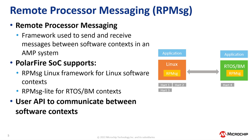The RPMessage Framework provides a user application programming interface to communicate between software contexts. For more information on inter-core communication or the RPMessage Framework on PolarFire SOC, please refer to the PolarFire SOC AMP documentation on GitHub. The link is provided in the description below.